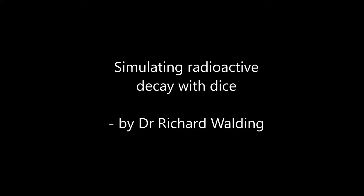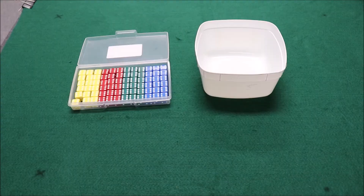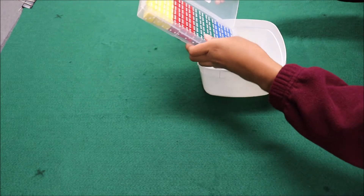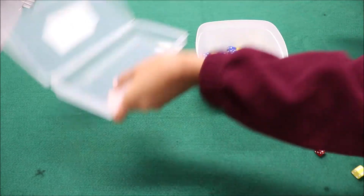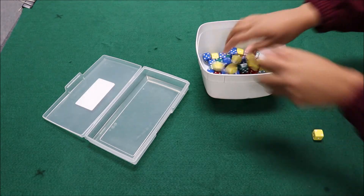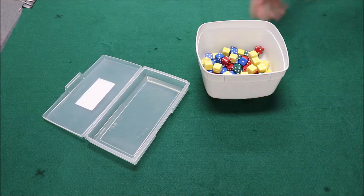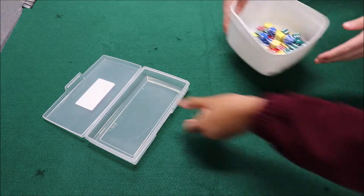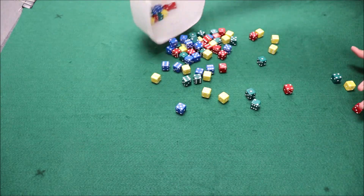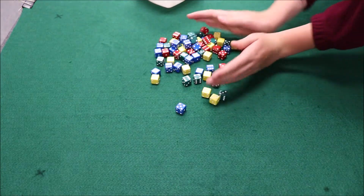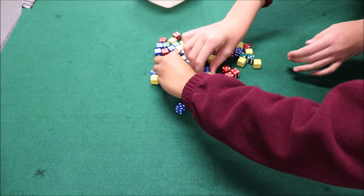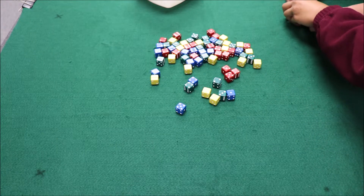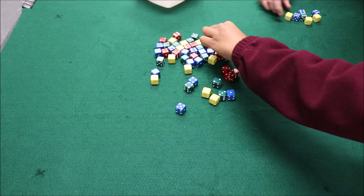This is a simple demonstration about how we can model radioactive decay using dice. We start with a pack of 72 dice, shuffle them up in a container, and then tip them out. There are six faces on the dice, so we're going to choose the one showing six dots on top and say that one has decayed — so one in six should decay. With 72 dice, that's about 12 that should decay.